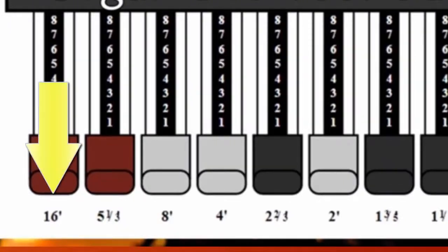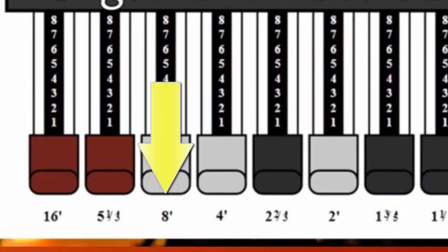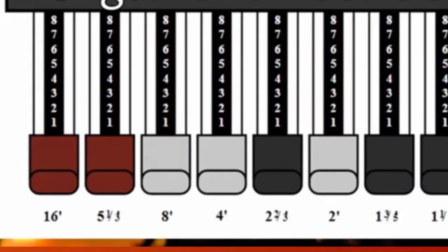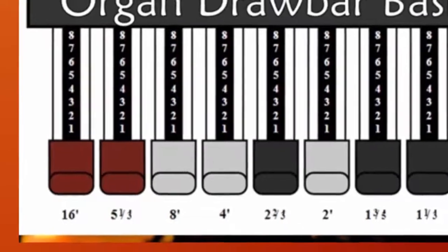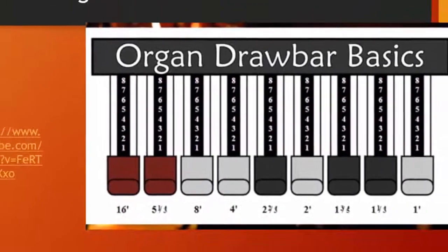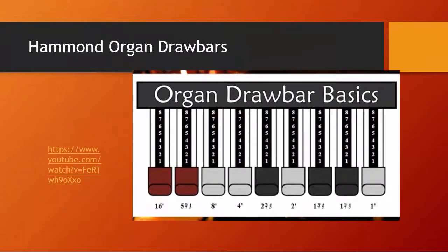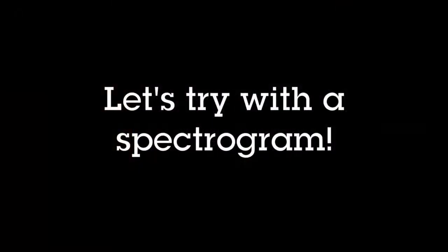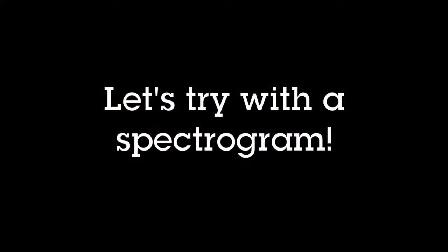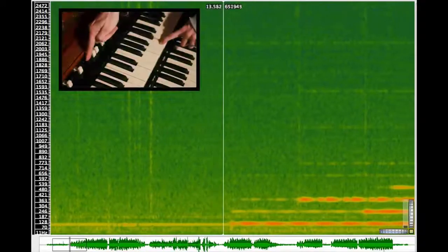Here is sixteen feet, and here is eight feet, for example — the Hammond organ simulates that sound. Looking through a spectrogram, we can see the overtones show up when the drawbars are pulled.